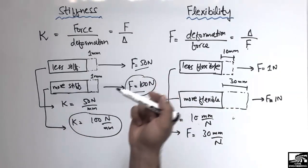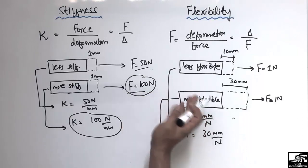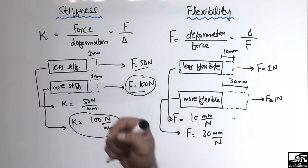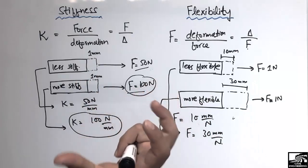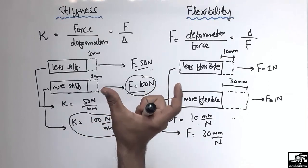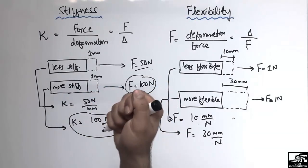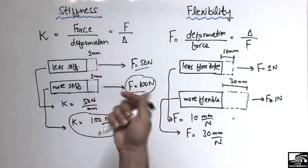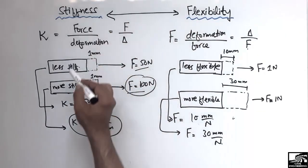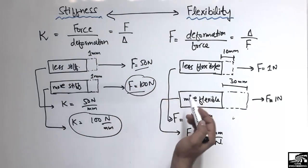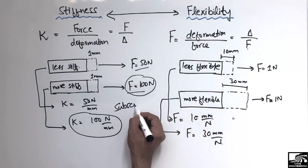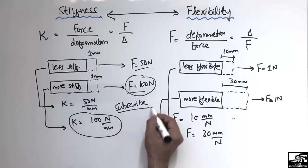These two properties are exactly opposite of one another. If you have a more stiff material, more force is required to create deformation. If you have a more flexible material, less force produces more deformation. Hope you guys understand the main difference between these two technical terms. Don't forget to subscribe to our channel for civil engineering videos. Thank you for watching.